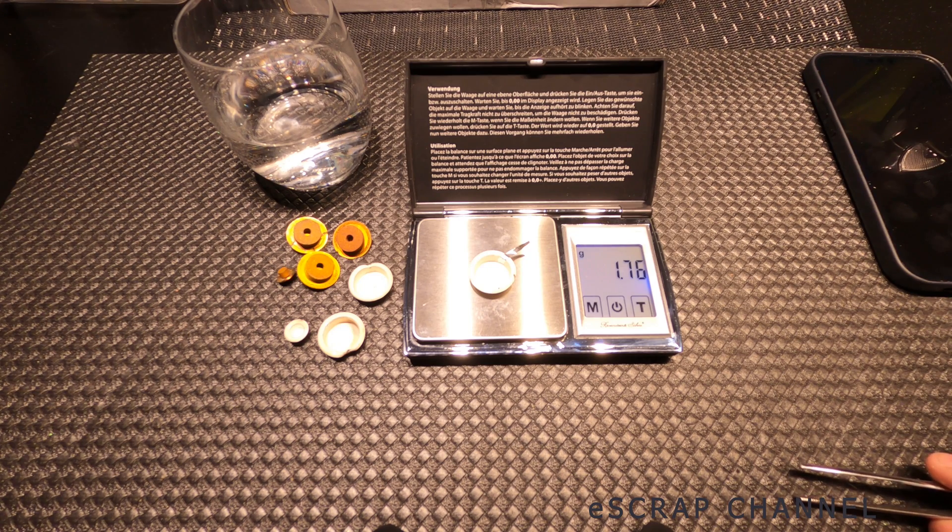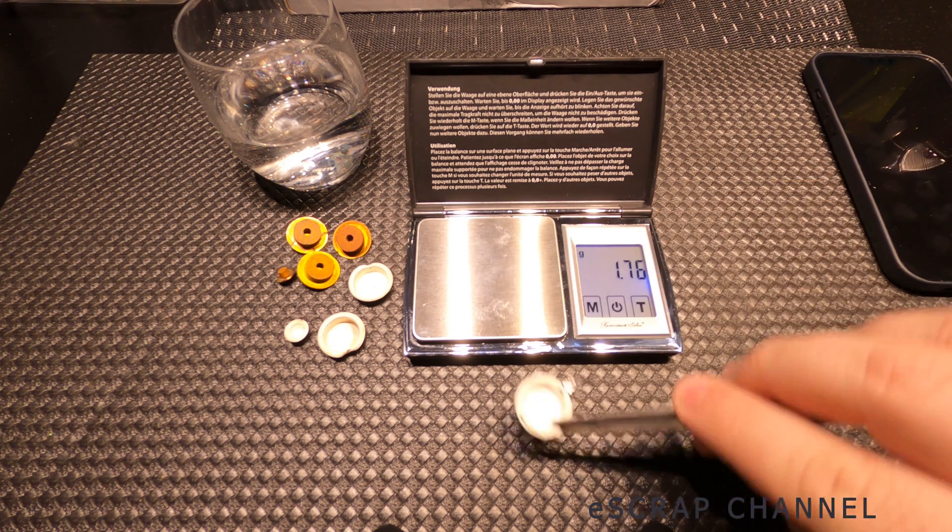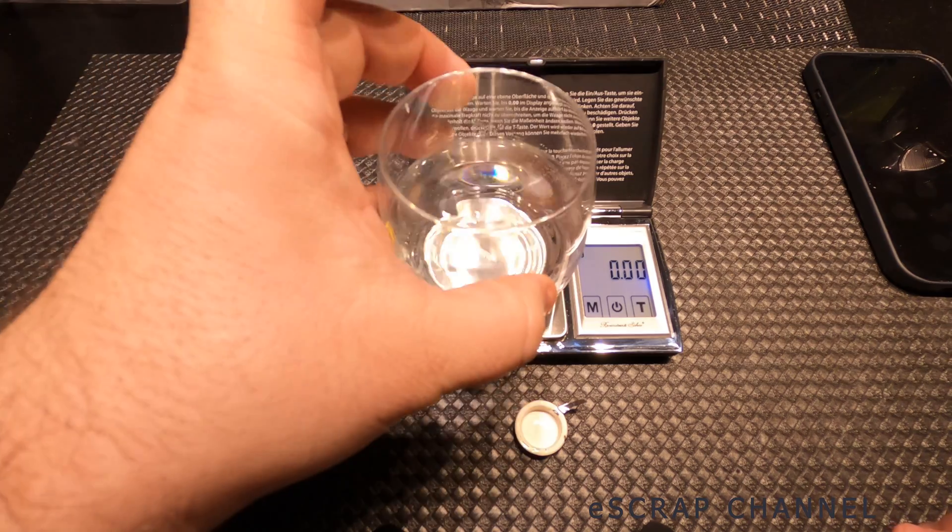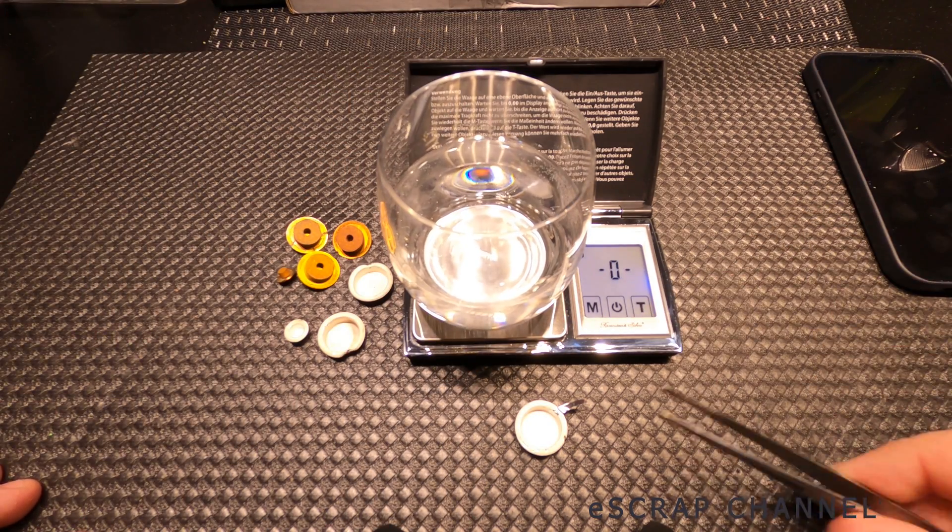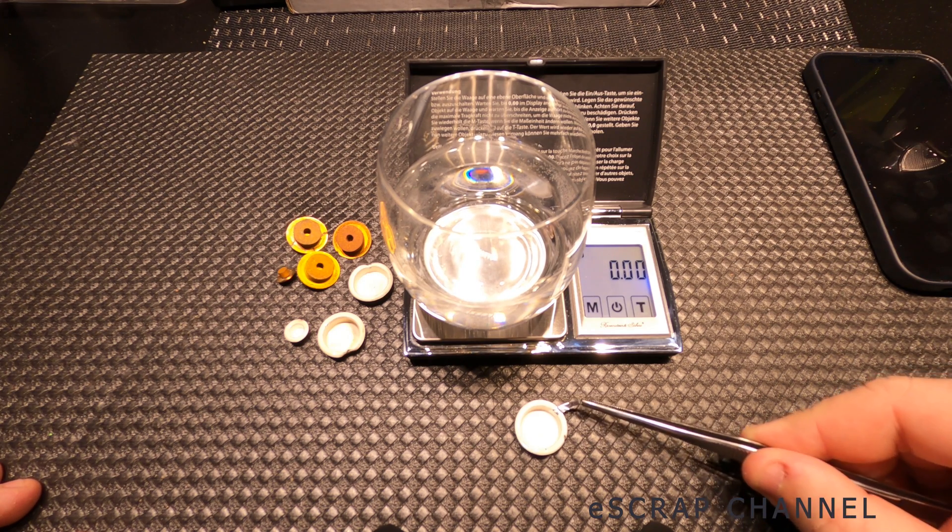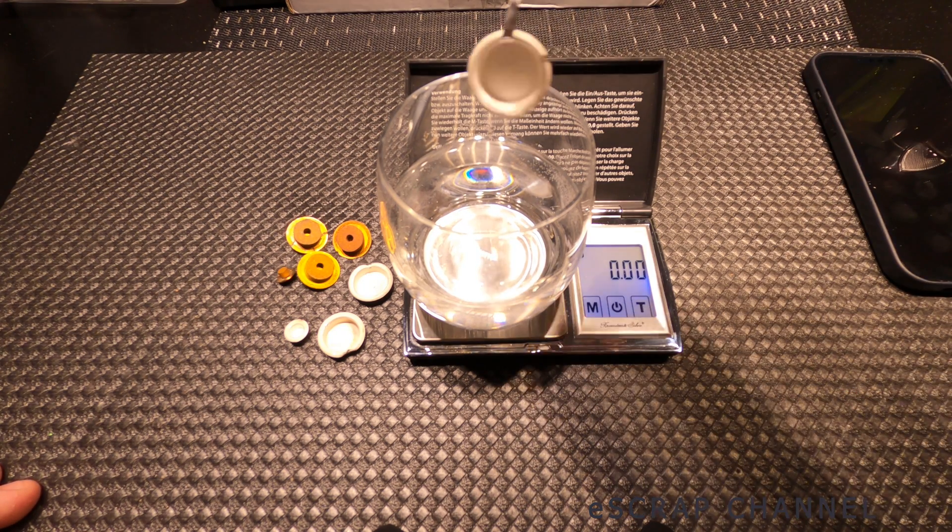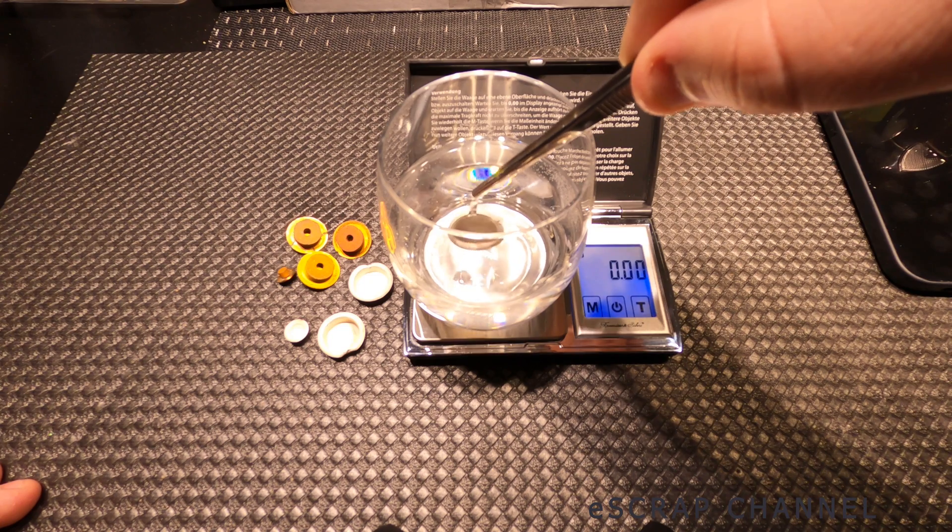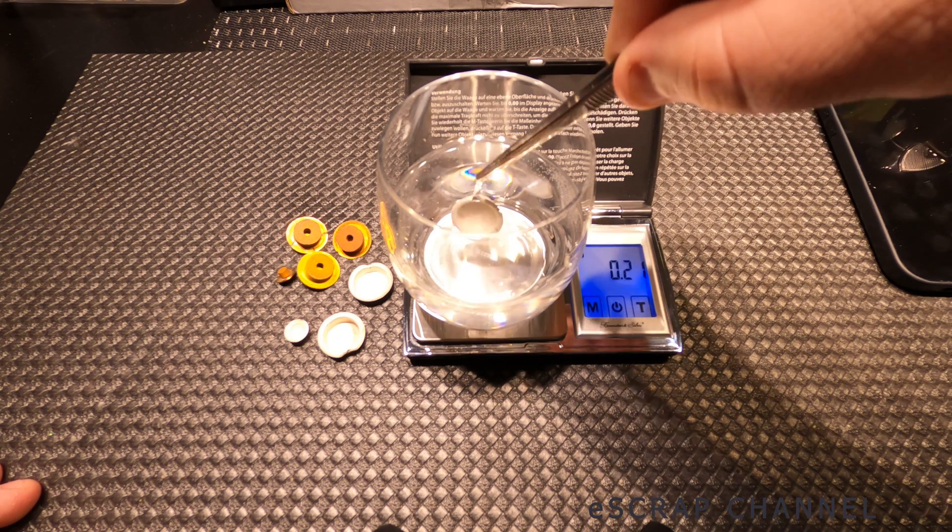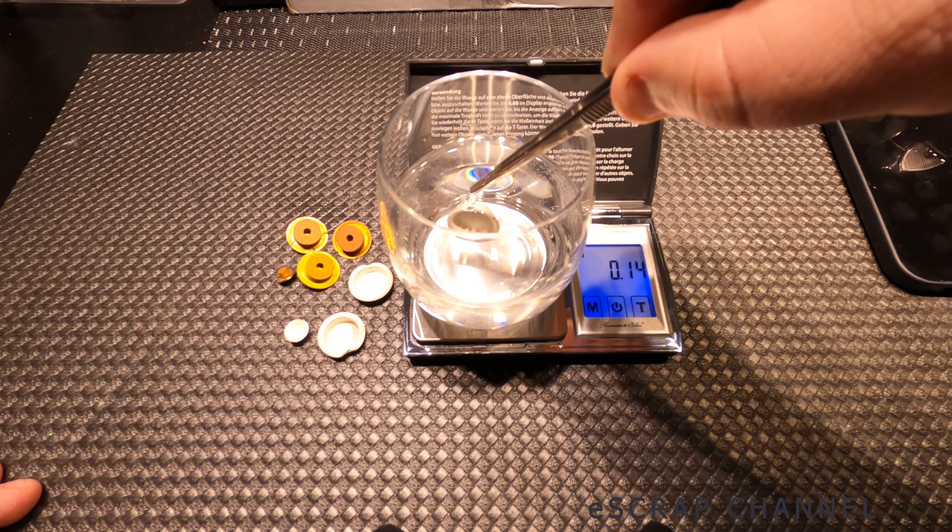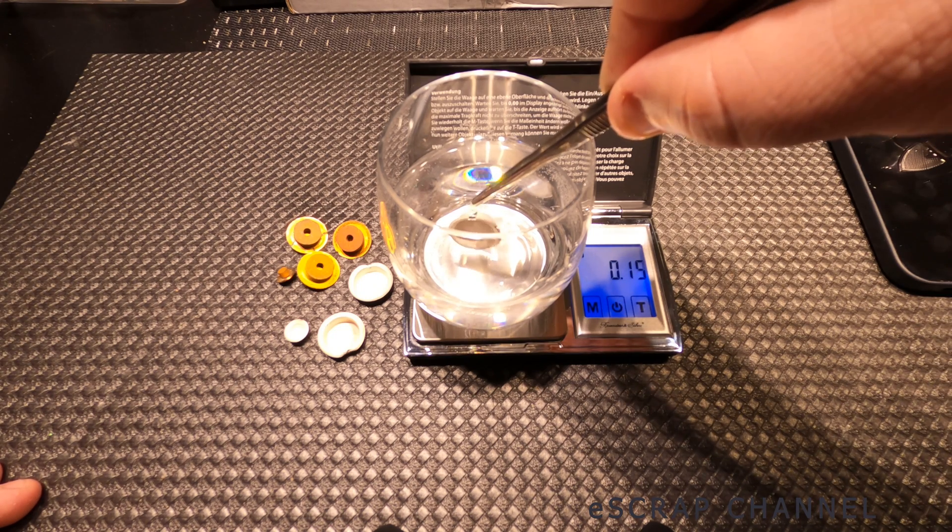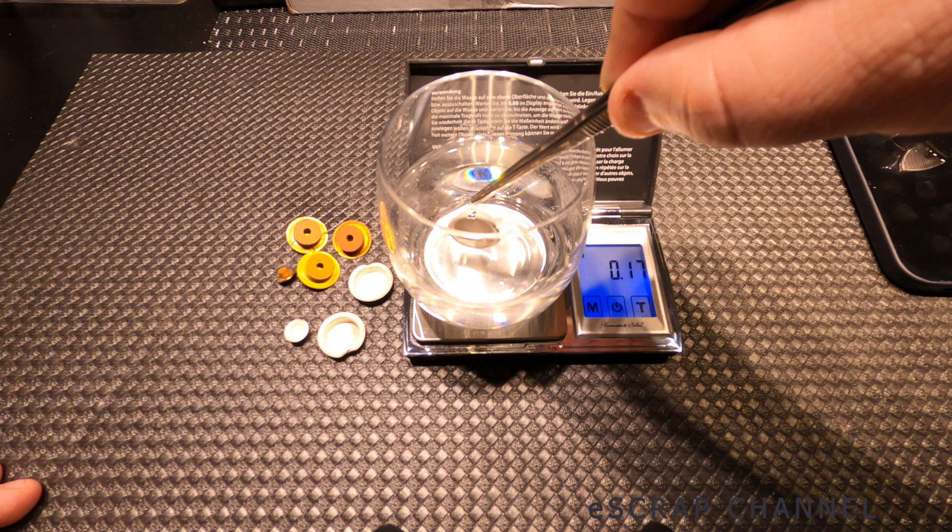0.76. Then we need a cup of water. We put the cup of water with zero on our scale and we submerge in the cup of water the object. It's very important, no bubbles. Submerge it fully. 0.70.